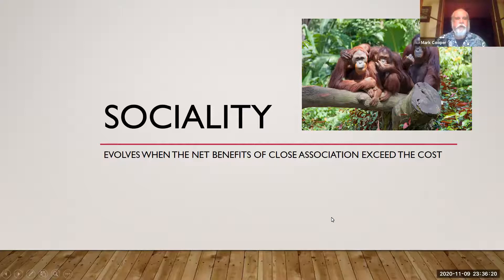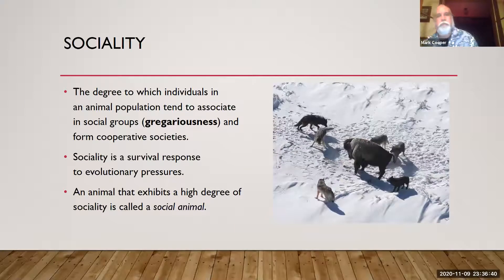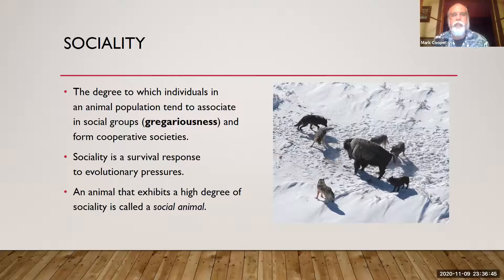This is the first of our lectures on sociality, trying to figure out why species or individuals tend to group together. This will be short and sweet as the first video — we just want to define it. Sociality is the degree to which individuals in an animal population tend to associate in social groups. The term often used is gregariousness, and refers to an organized cooperative society.